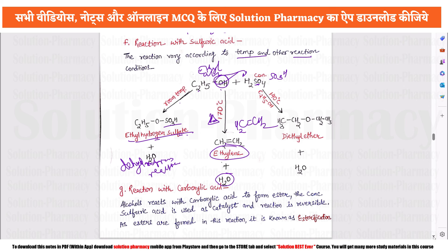If excess ethyl alcohol is used and the temperature is 140°C, the sulfuric acid causes dehydration releasing water. One molecule of ethyl combines with another molecule of ethyl, giving two molecules joining to produce diethyl ether as the product.